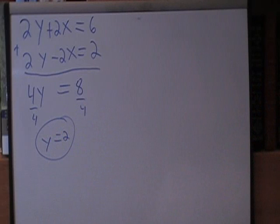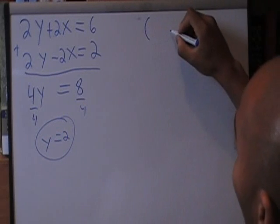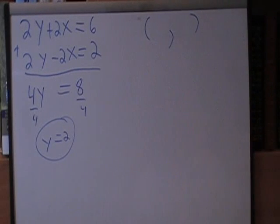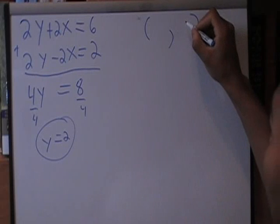So that's half of our answer. The ordered pair is the solution to our linear equations, the ordered pair that satisfies both linear equations. So we know the y component.